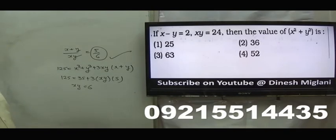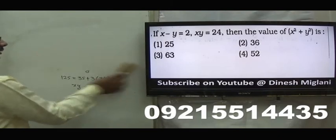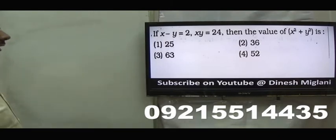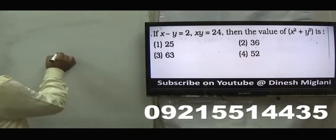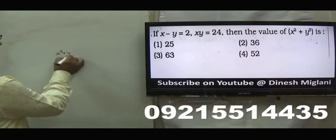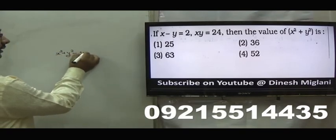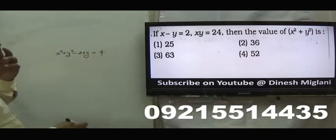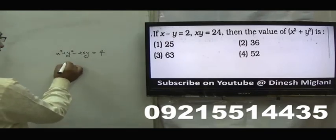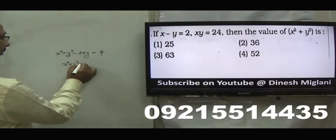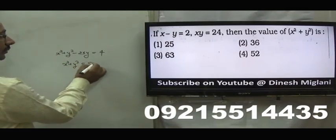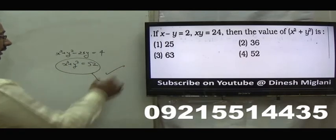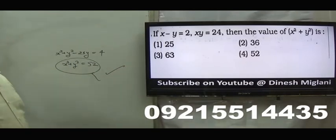x minus y equal to 2, xy equal to 24. Find x square plus y square. Squaring both sides: x square plus y square minus 2xy equal to 4. xy is 24, so 2xy is 48. Hence x square plus y square equals 4 plus 48 equal to 52. Fourth is my answer, 52.